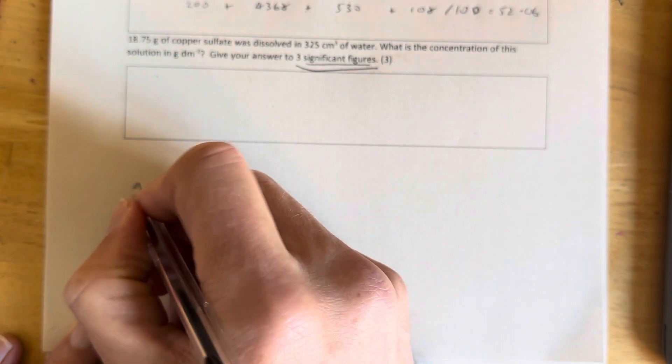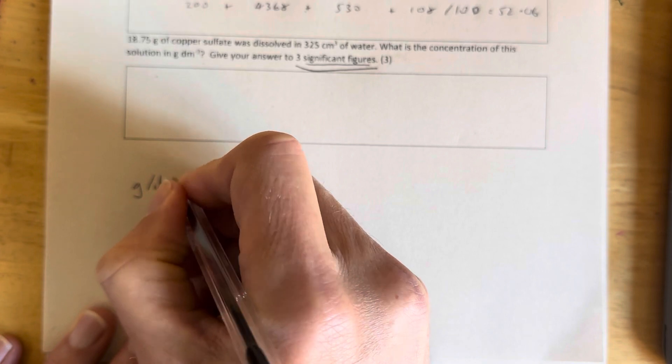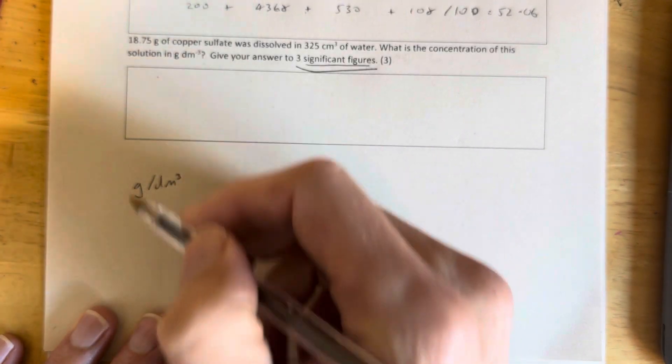If you're an AQA candidate, they write grams per decimetre cubed like that. It means the same thing. Both those, they mean the same thing.